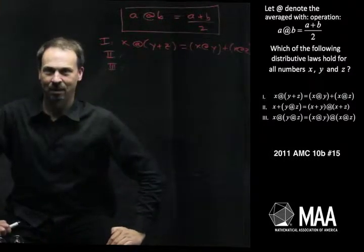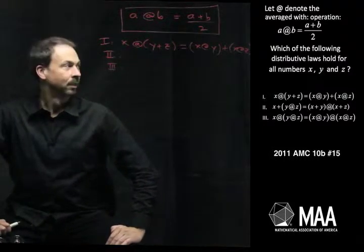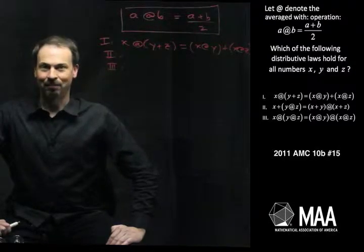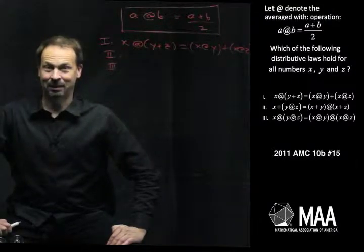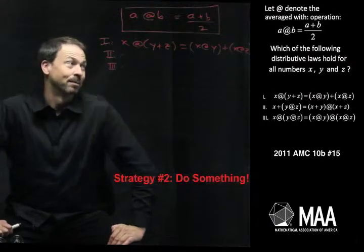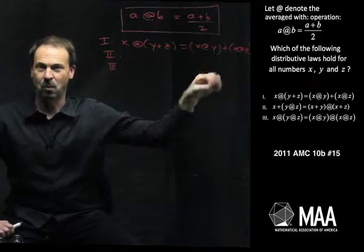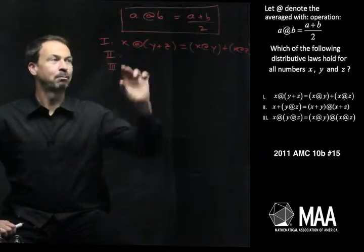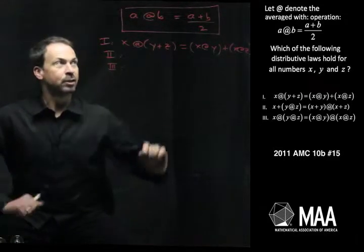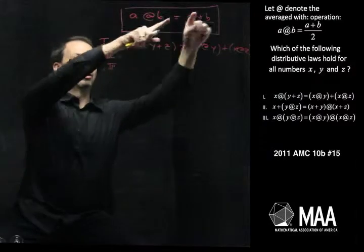And the question is, which of these three actually hold true? All right, so it seems fairly obvious what to do in this case. Just do something, strategy number two. Just do it. So let me just play with the first one. I guess I'll do the same with the second and third ones, but I'll leave that for later on. Let's just play with the first one. So we've got this strange operation called at, which is just averaging.